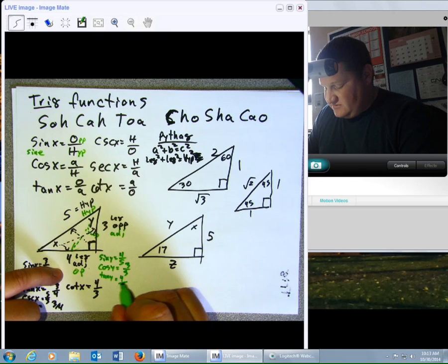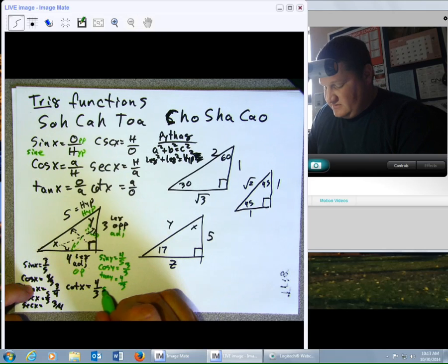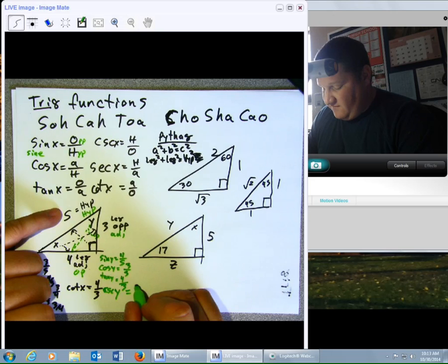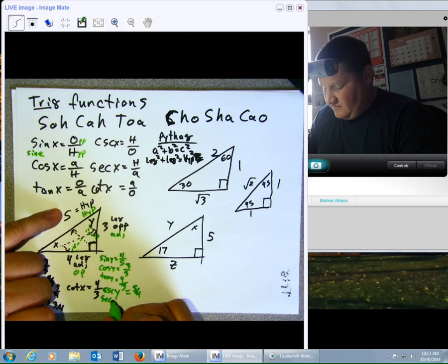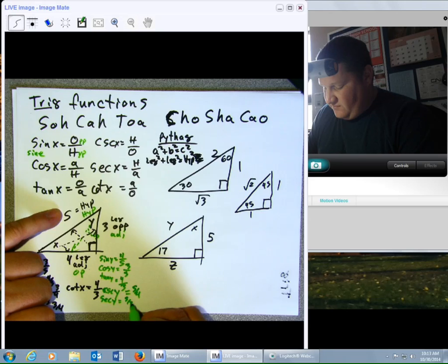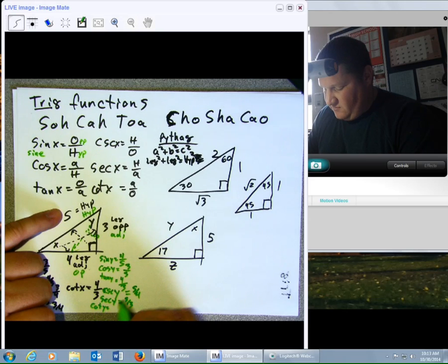Cosecant of Y would be hypotenuse over opposite, so it's going to be 5 over 4. Secant of Y is going to be 5 over 3. And finally, cotangent Y equals 3 over 4.